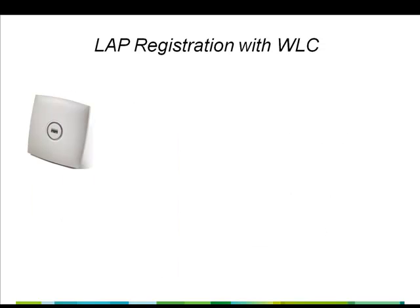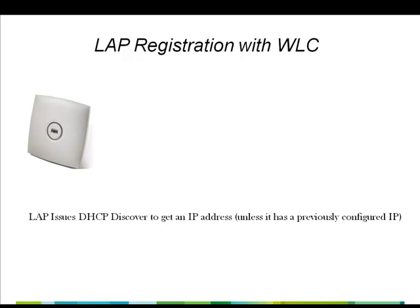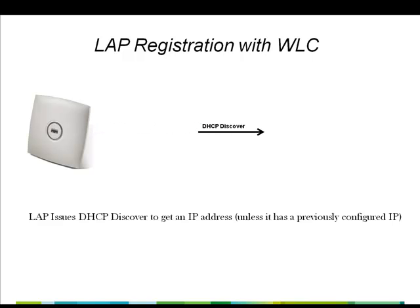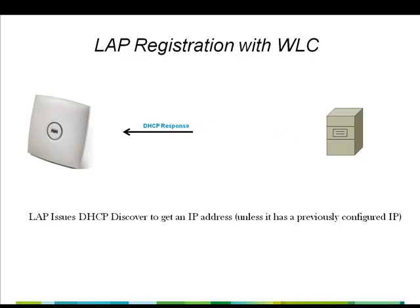Once the lightweight access point boots up, the first thing it does is look for an IP address, assuming we have an out-of-the-box lightweight access point. It sends the DHCP Discover message hoping to hear from DHCP servers in the network. DHCP servers which receive the DHCP Discover respond and provide an IP address. Optionally, the DHCP server can also be configured to return other information as we will see shortly.